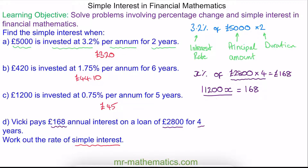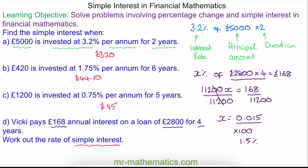To work out what X is, we divide both sides by £11,200. These cancel, leaving X equal to 0.015. To convert this decimal into a percentage, we multiply by 100, giving us 1.5%. So 1.5% is our simple interest rate.